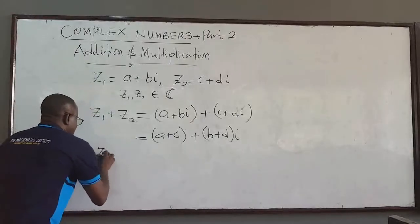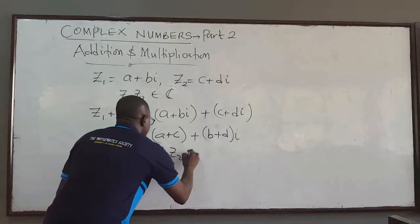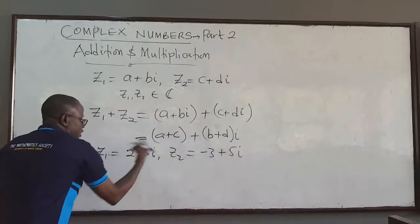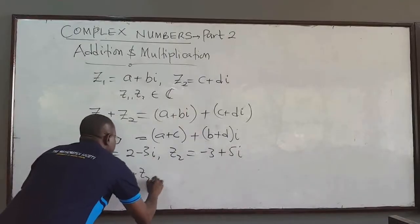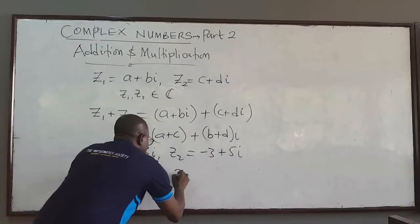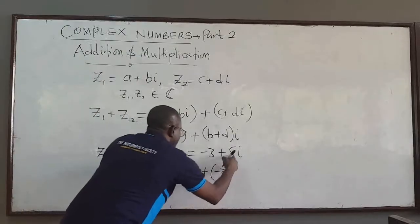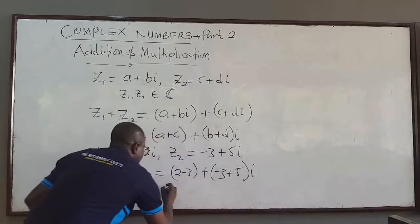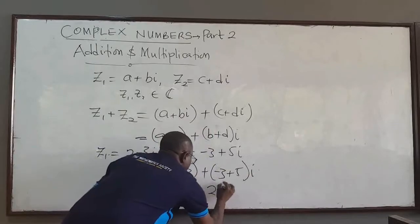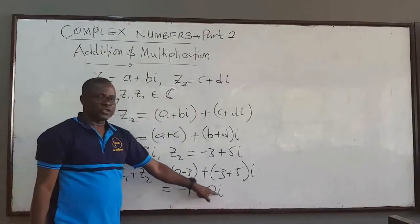For example, if Z1 is equal to 2 minus 3i, and Z2 is equal to negative 3 plus 5i, then if I want to add them, Z1 plus Z2, the sum of the two complex numbers will just be 2 plus negative 3 — that's 2 minus 3 — plus negative 3i and 5i. So the real part gives negative 1, and the imaginary parts give positive 2i. So the sum of the two complex numbers is negative 1 plus 2i.